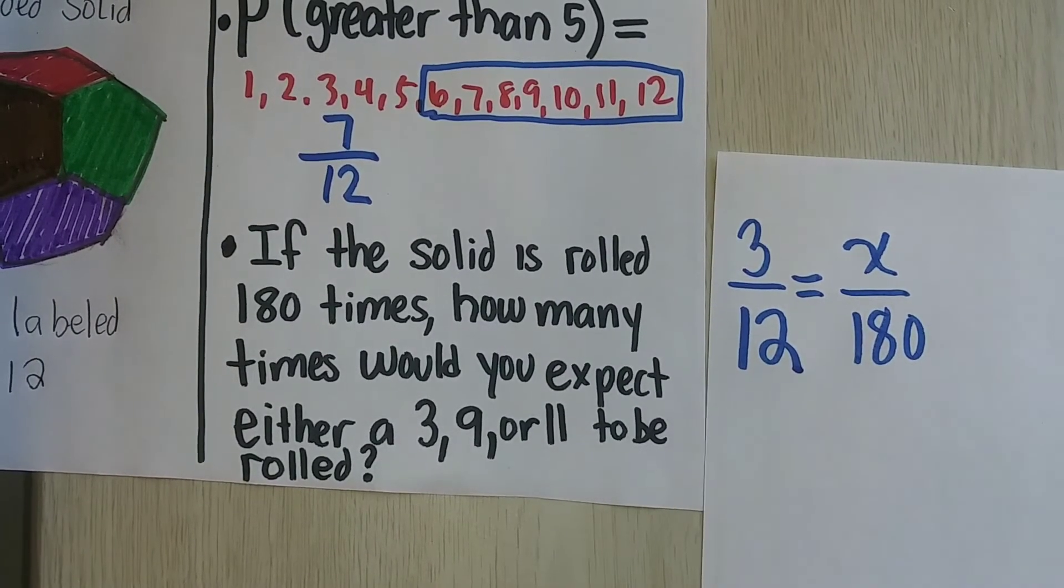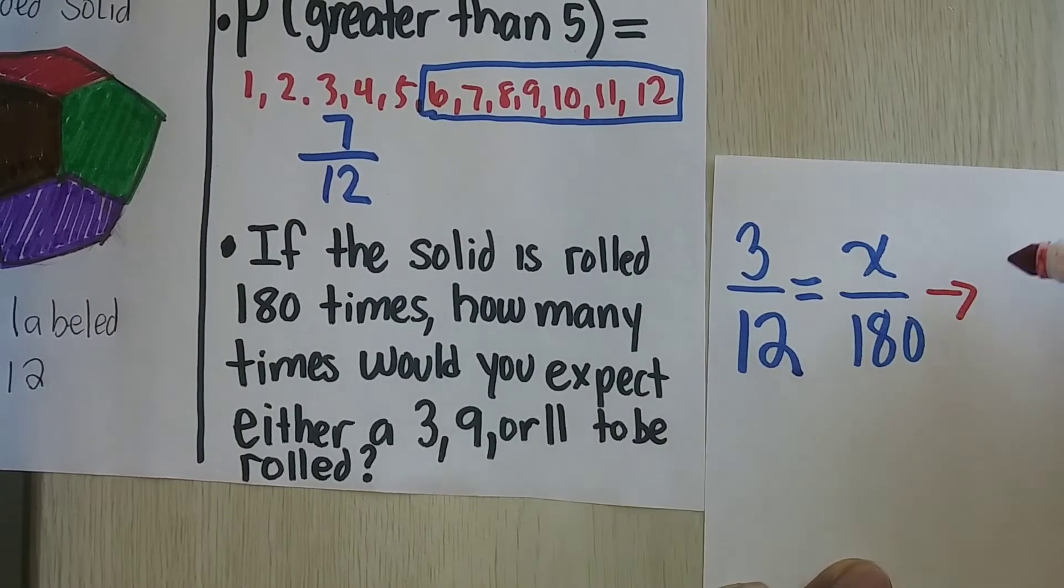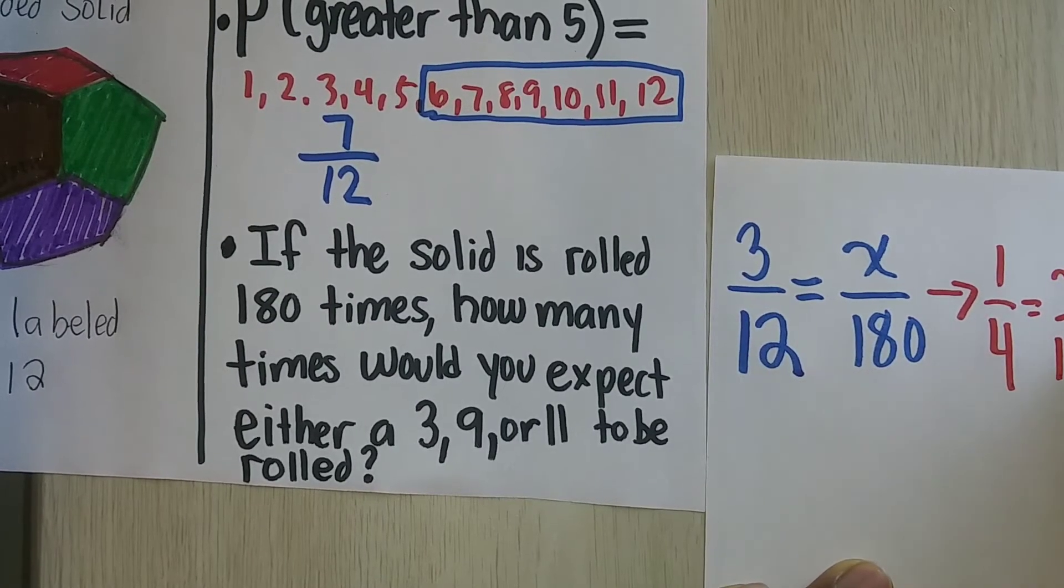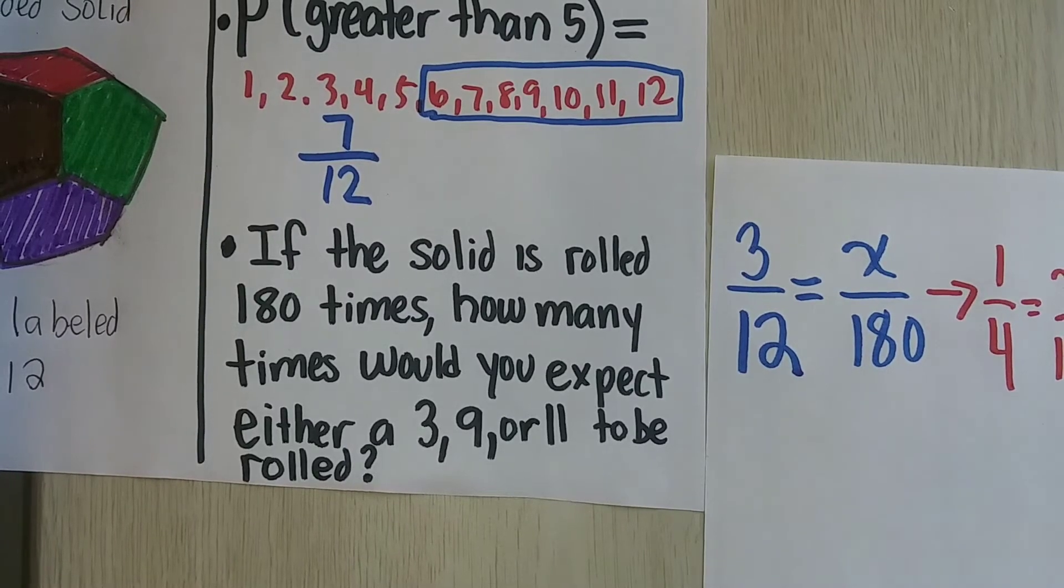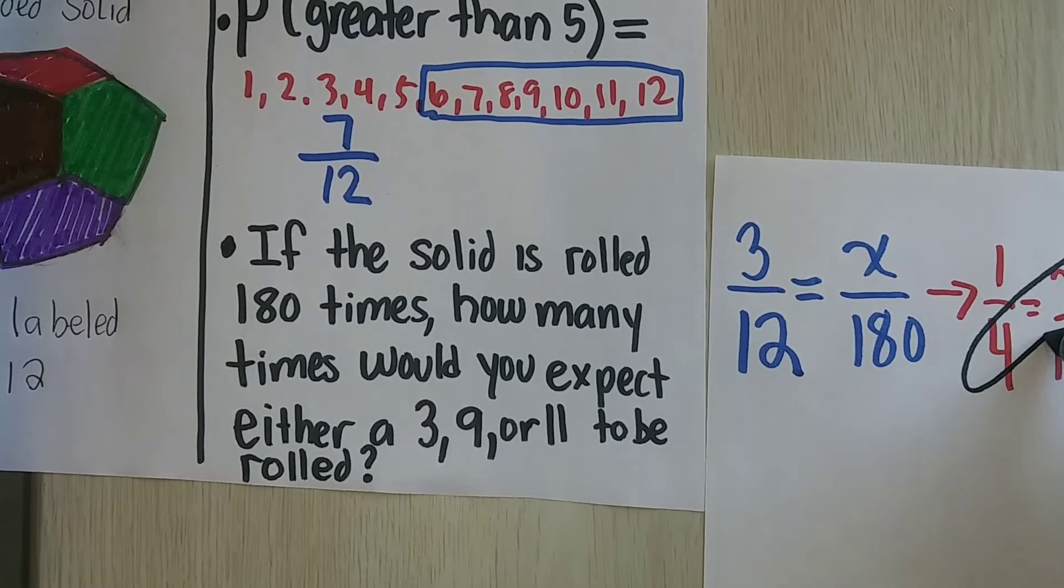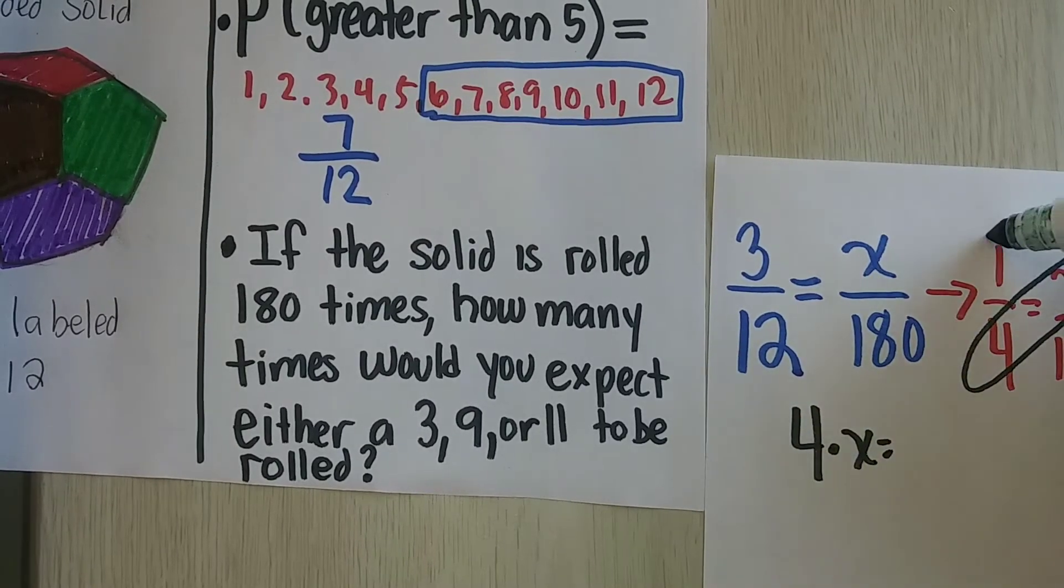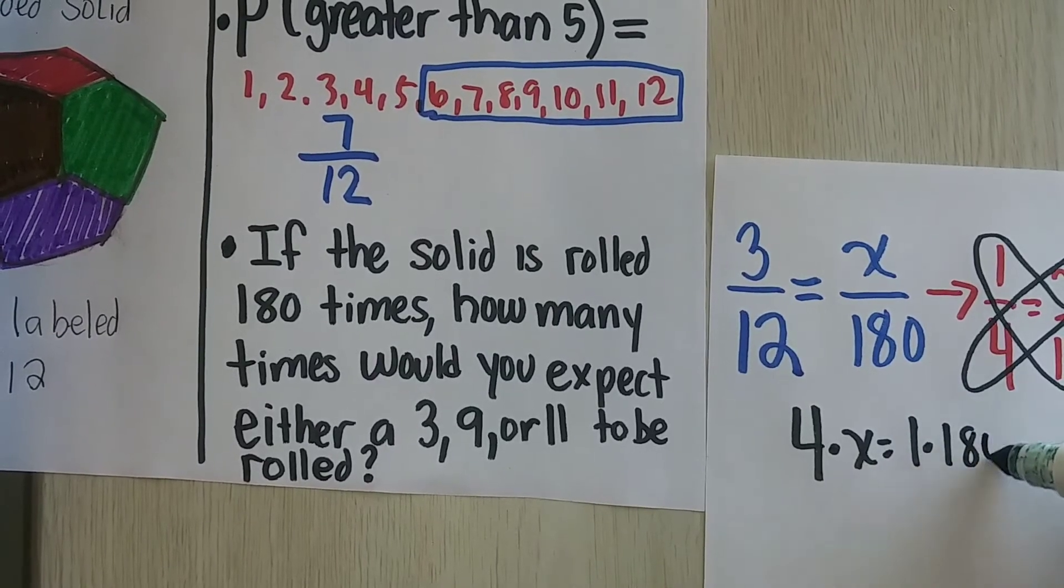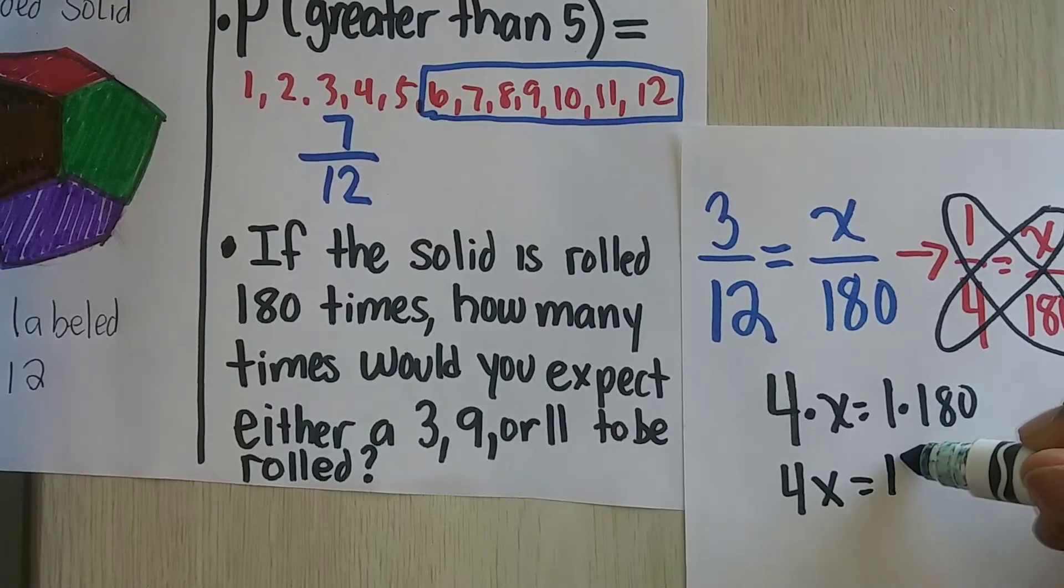Now, you can take it one step further, and you can use cross multiplication, or I want to simplify 3/12 to 1/4. That's going to make my math a little bit easier for me. And if you don't see that right away, it's okay. You can still go ahead and use cross multiplication and get the same answer. 4 times X is the same as 1 times 180. 1 times 180, which will give me 4X is equal to 180.